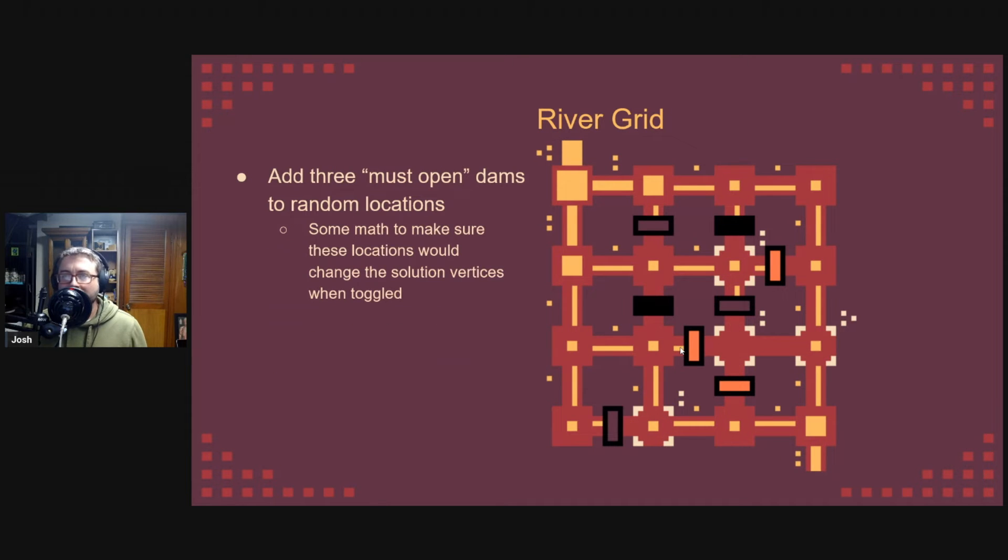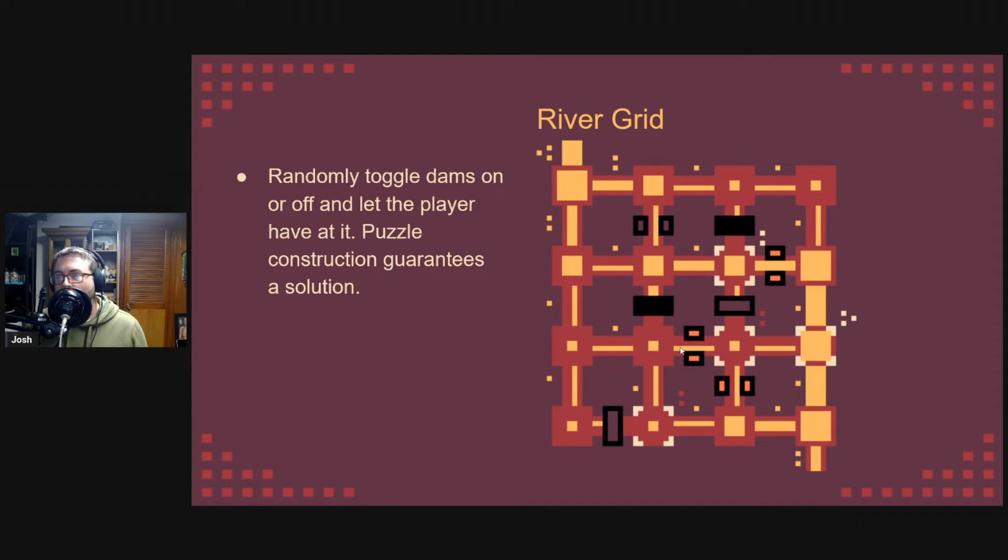Next, we add three must-open dams. The player needs to have all of these open for our known solution. Finally, I randomly open and close all these dams before the player arrives. The player finds the puzzle, and I am satisfied knowing that there is at least one solution for it. There could be more than one. I'm cool with that, but I know that it is a solvable puzzle. It has to be because that's the way I built it.